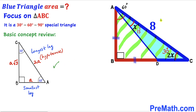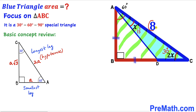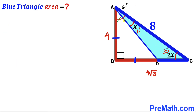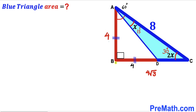Applying this to our diagram: side AC (8 units) is the hypotenuse, so the smallest leg AB equals half of 8, which is 4 units, and side BC equals 4 times the square root of 3. Since triangle ABD is isosceles with AB equal to BD, BD is also 4 units. The full length BC is 4√3 and BD is 4.